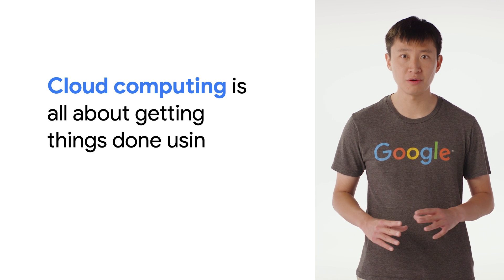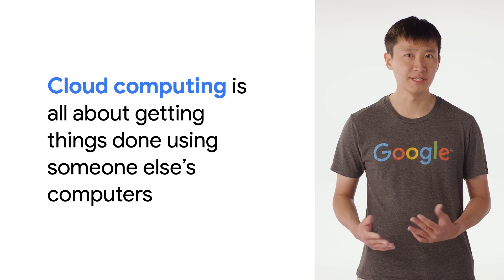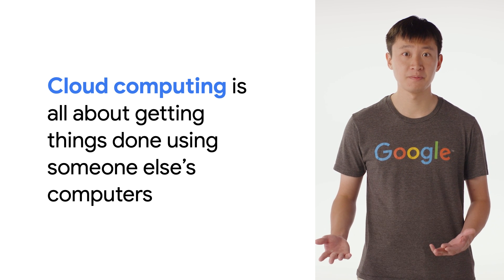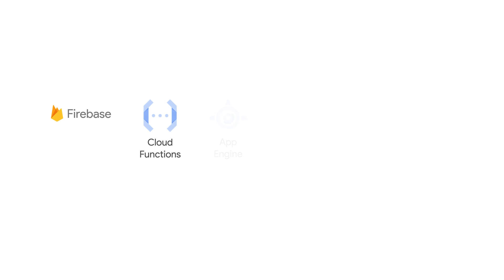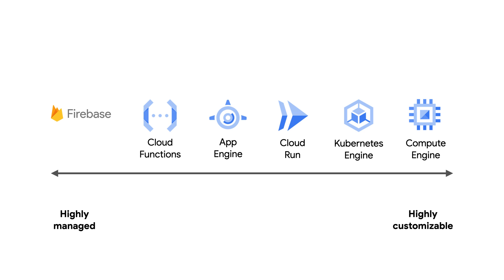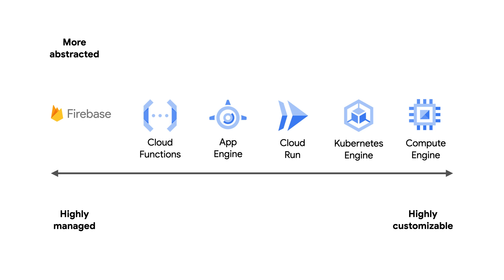As we mentioned in the first video of Google Cloud Essentials, cloud computing is all about getting things done using someone else's computers. With Google Cloud, you're getting things done using Google's computers. There are several different compute products you can use to run code on Google Cloud. These options range from highly managed to highly customizable. On the highly managed side, Google abstracts more of the back-end server and infrastructure logic so that you can get up and running quickly. On the highly customizable side, you as a developer are in charge of more of the back-end server and infrastructure logic, but this gives you more flexibility to customize these options for your use case.